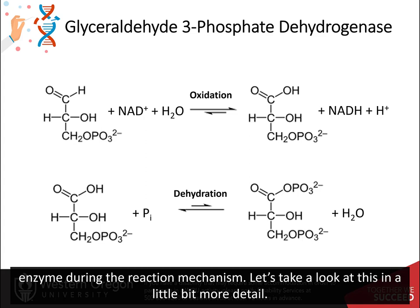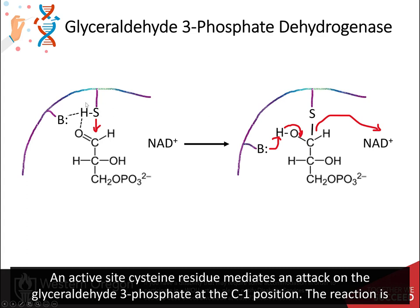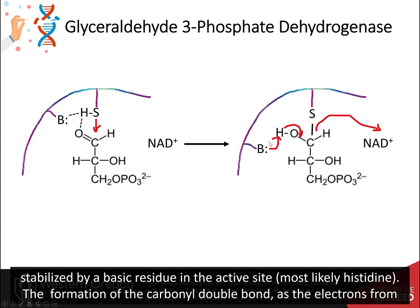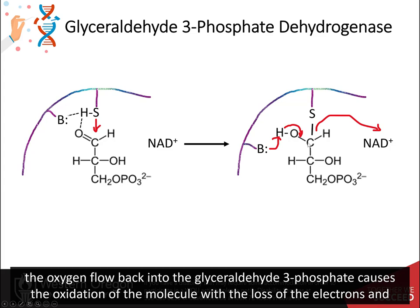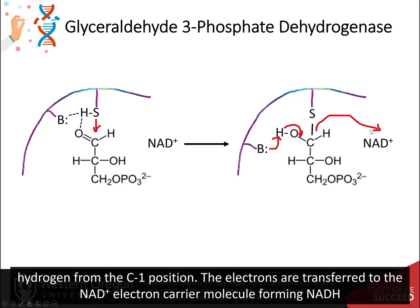An active site cysteine residue mediates an attack on the glyceraldehyde 3-phosphate at the C1 position. The reaction is stabilized by a basic residue in the active site, most likely histidine. The formation of the carbonyl double bond as the electrons from the oxygen flow back into the glyceraldehyde 3-phosphate causes the oxidation of the molecule with the loss of the electrons and the hydrogen from the C1 position. The electrons are transferred to the NAD electron-carrier molecule forming NADH.